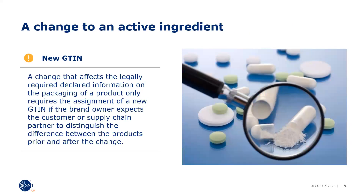A change that affects the legally required declaration information on the packaging of a product only requires the assignment of a new GTIN if the brand owner expects the customer or supply chain partner to distinguish the difference between the products prior to and after the change.